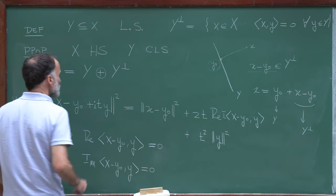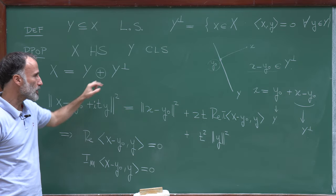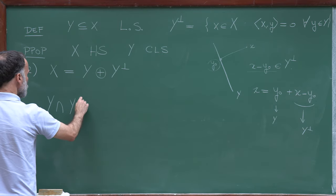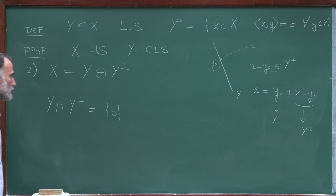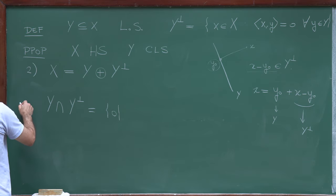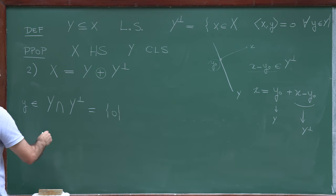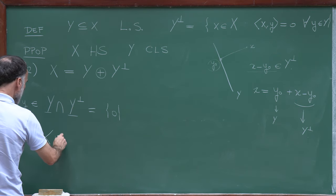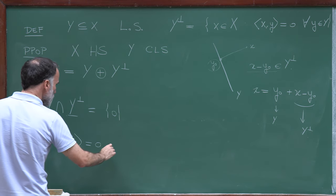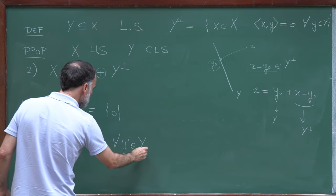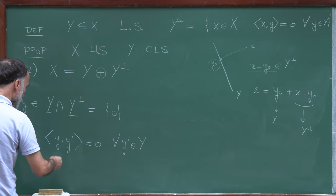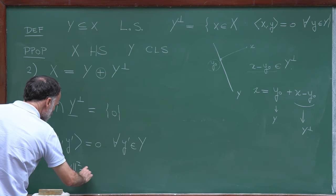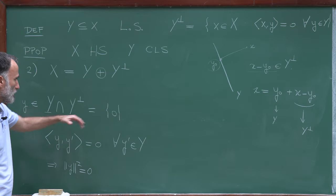It remains to show that Y ∩ Y⊥ = {0}. Take any element Y in this intersection. It belongs to Y⊥, so ⟨Y, Y'⟩ = 0 for all Y' in Y. Since Y also belongs to Y, we can take Y' = Y, giving ‖Y‖² = 0, and therefore Y = 0. This proves the intersection claim.